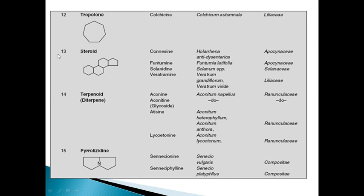Steroidal alkaloids: colchicine is cited as an example; Polyalthia longifolia is the botanical origin and Annonaceae is the family. Terpenoid alkaloids: the example is aconitine. Aconitum napellus is the botanical origin and Ranunculaceae is the family.